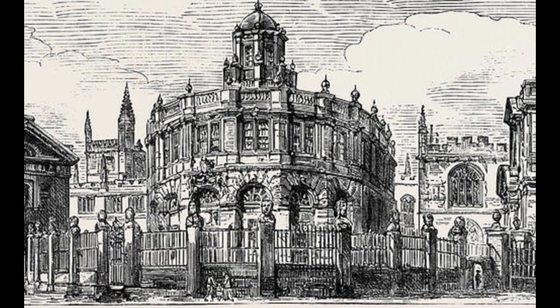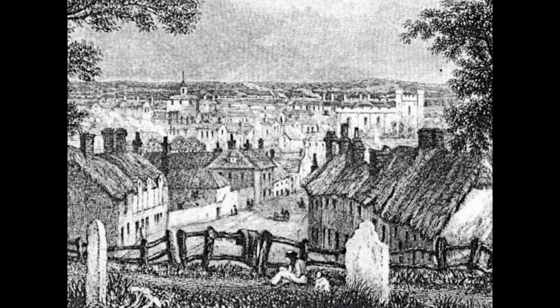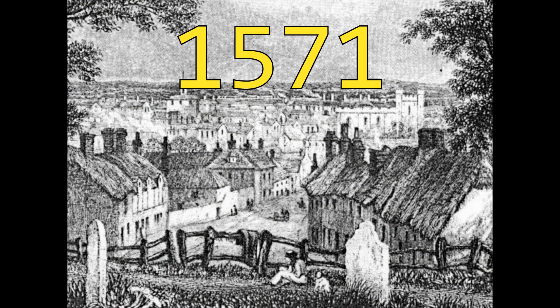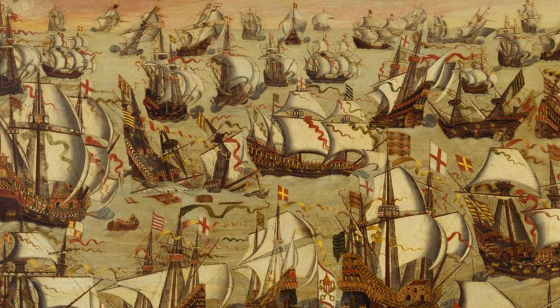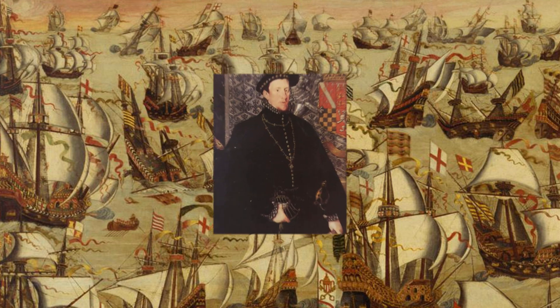Moving on to the plots — they all revolve around Mary Queen of Scots. This makes sense as she was a Catholic Queen related to the current Queen, who had no heirs, just sitting around in England — a pretty good opportunity for anyone looking to overthrow Elizabeth. This was taken advantage of in 1571 when an Italian banker, Ridolfi, planned to murder Elizabeth for a Spanish invasion which would place Mary on the throne, married to the Duke of Norfolk.